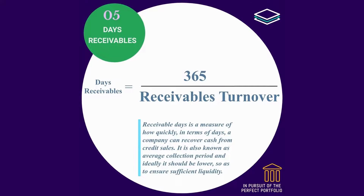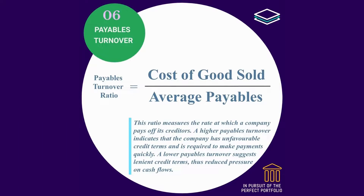Days receivables is equal to 365 divided by receivables turnover. Days receivables is a measure of how quickly, in terms of days, a company can recover cash from credit sales. It is also known as average collection period, and ideally it should be lower, so as to ensure sufficient liquidity. Payables turnover ratio is equal to cost of goods sold divided by average payables. This ratio measures the rate at which a company pays off its creditors. A higher payables turnover indicates that the company has unfavorable credit terms and is required to make payments quickly. A lower payables turnover suggests lenient credit terms, thus reduced pressure on cash flows.